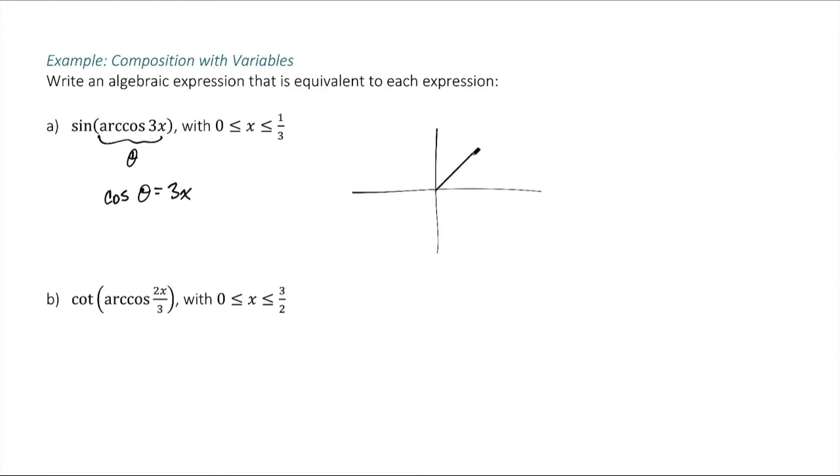So I draw my angle, and then I can say, well, now I've got this angle theta, cosine is adjacent over hypotenuse, so I can just call adjacent 3x and the hypotenuse 1. And then I can solve for this side over here.